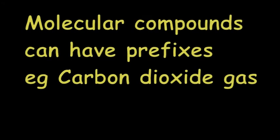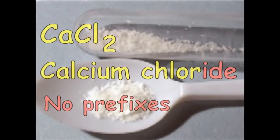We did use multiplier prefixes in our previous molecular compounds — they contained two non-metals and were usually gases. This is calcium chloride, a drying agent. Notice that the chlorine has been changed to chloride.